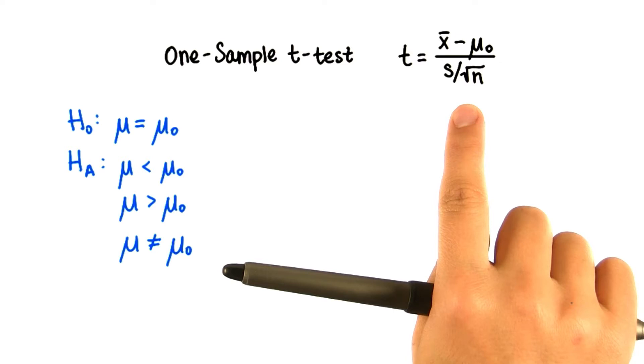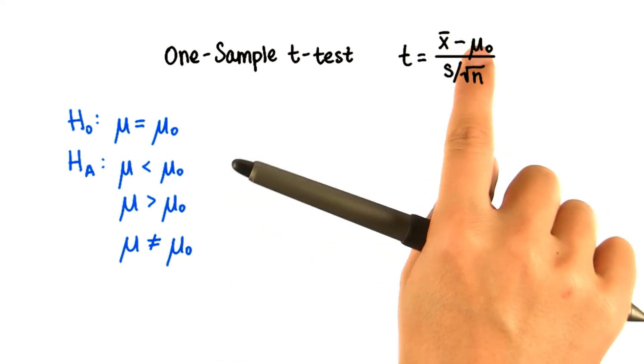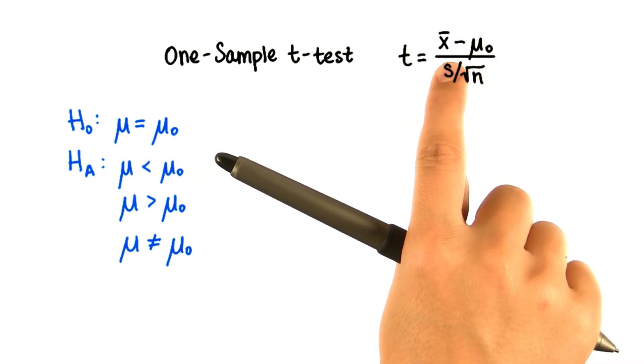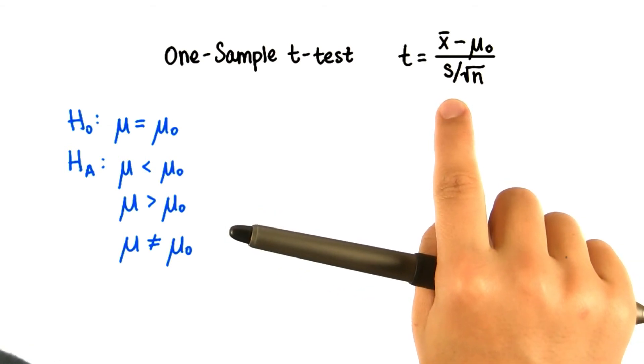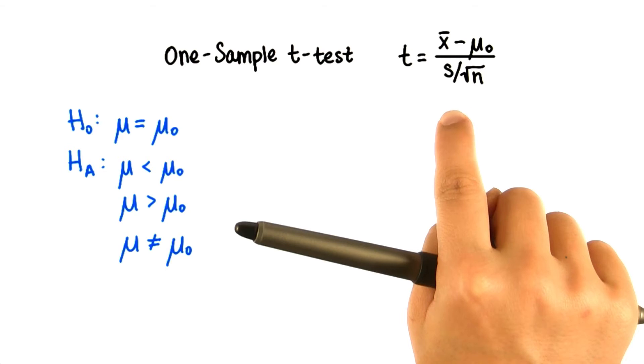When we calculate the t-statistic, the numerator is the difference between the sample mean and this value, where the sample mean is the point estimate for the population mean μ. And the denominator measures the amount of difference between the population mean and μ₀ that we would expect by chance.